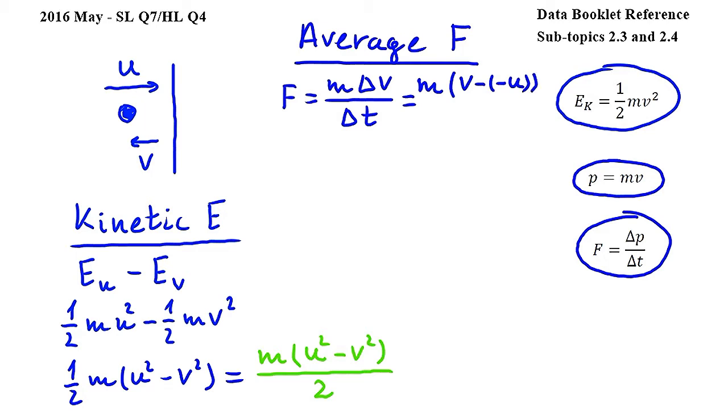Since the duration of the collision is given to be capital T, delta T, the change in time is T. V minus negative U is equal to V plus U, or U plus V. So I get F is equal to M times U plus V over capital T. Therefore, the answer to this question is A.